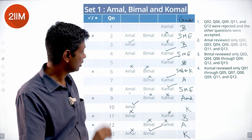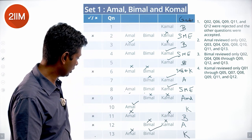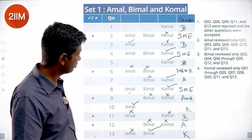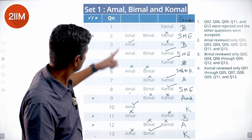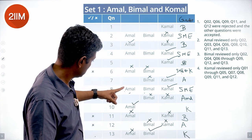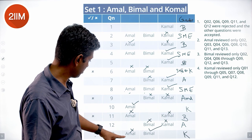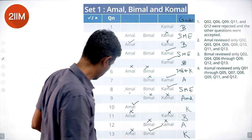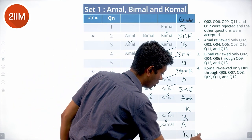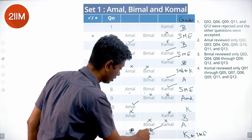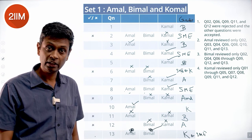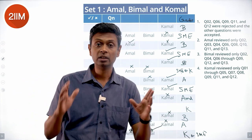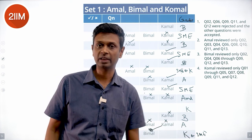With some allowance: for questions where only Amal and Bimal reviewed, it could have been created by an SME or by Komal — both possibilities exist. If SME created it, both Amal and Bimal approved (or both rejected). If Komal created it, then Amal rejected and Bimal approved (or rejected). So for those cases, the creator is ambiguous between SME and Komal.